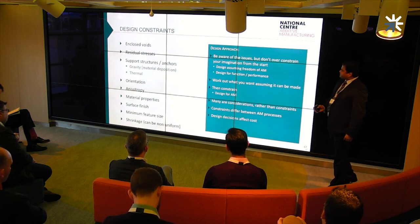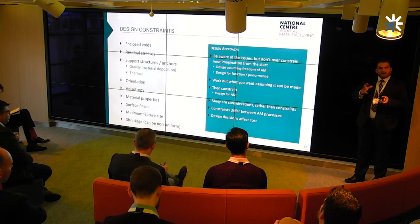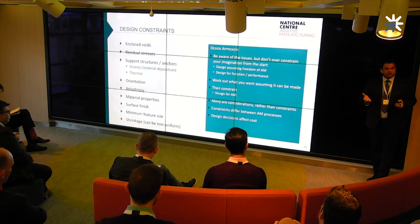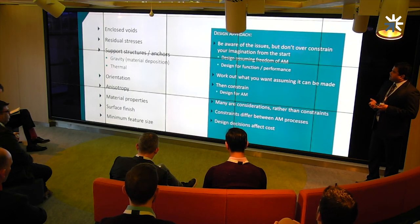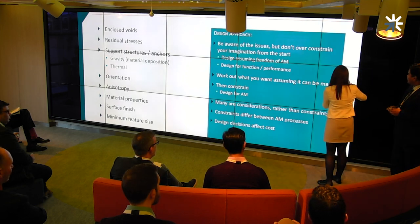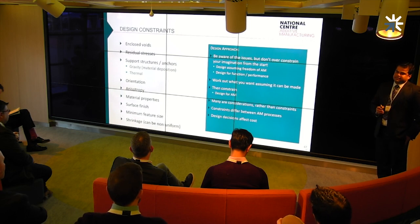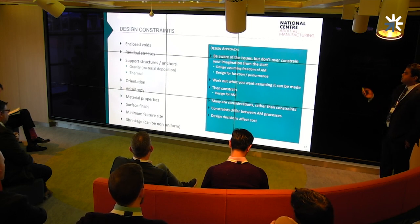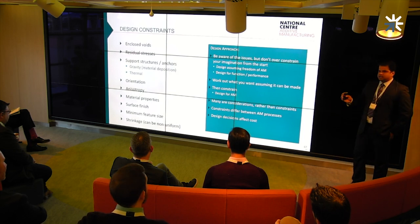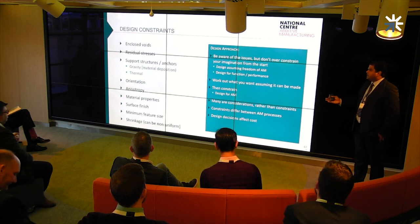Heat treatments are known to us — we heat treat normal parts, and we can use customized heat treatments so material properties can be achieved. Last few things are surface finish and feature sizes. Shrinkage is an issue for certain methods but not all. We have to understand these constraints very carefully when designing for manufacturing. We design the part functionally, but then we have to add allowances to counter these issues.